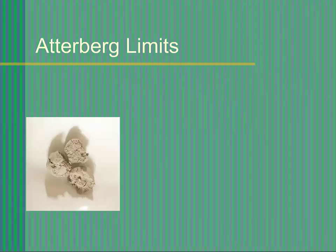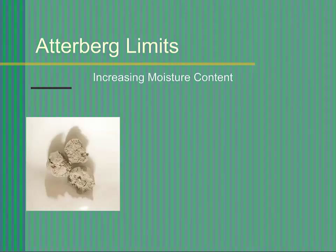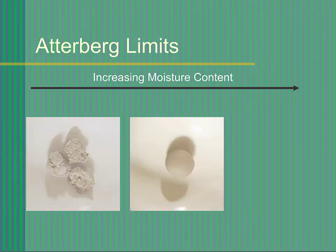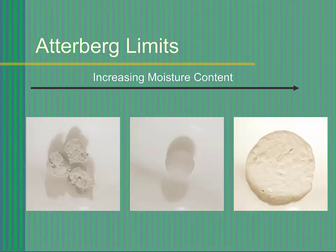Consider a sample of clay or silty soil that is relatively dry with a moisture content of, say, 10%. At this moisture content the soil will be stiff and act as a semi-solid material that can be deformed but will crack if you try to mold it into different shapes. As water is added to the soil sample, increasing its moisture content, it will become progressively softer. At some point it will no longer act as a semi-solid material, but will act as a plastic material that can be deformed and molded without cracking. If additional water is added, further increasing the moisture content of the soil, the soil will eventually act as a viscous liquid that will ooze and flow.